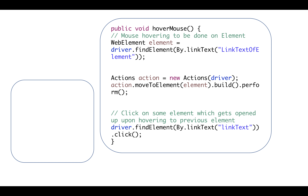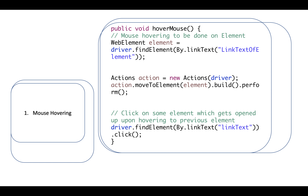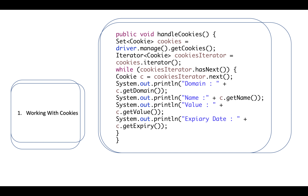How to do mouse hovering: use the Actions class. The command is actions.moveToElement(element).build().perform() — this will move your mouse to the specified element.